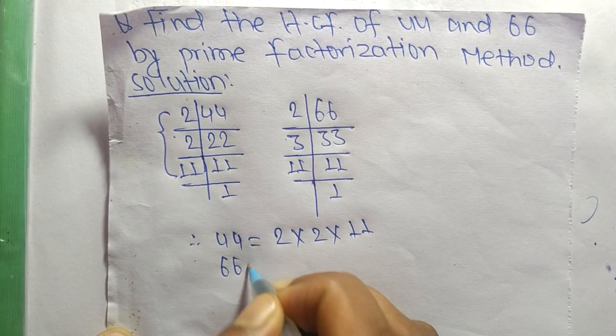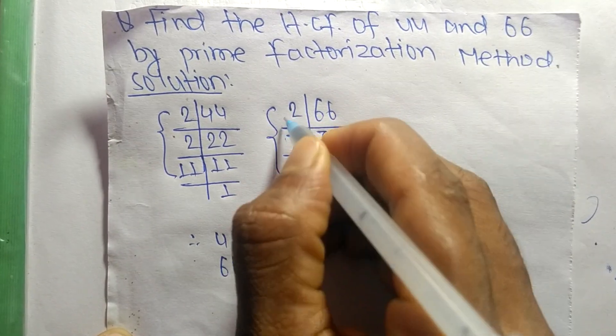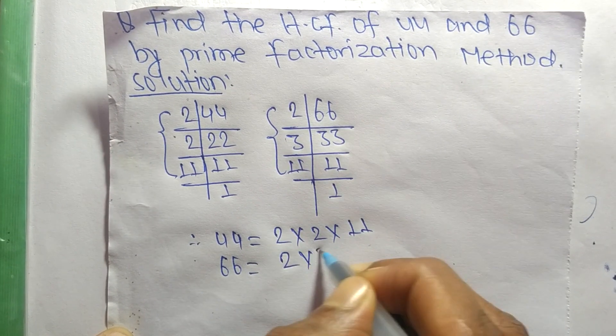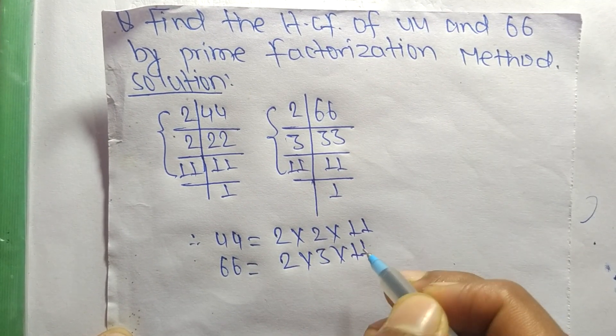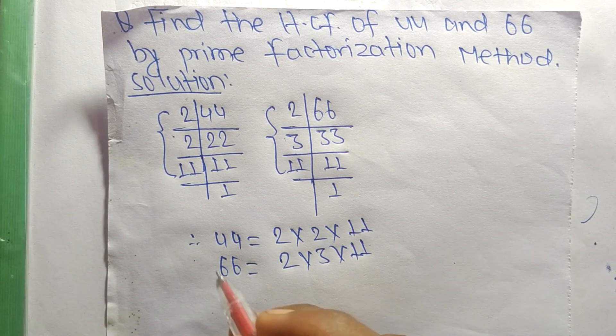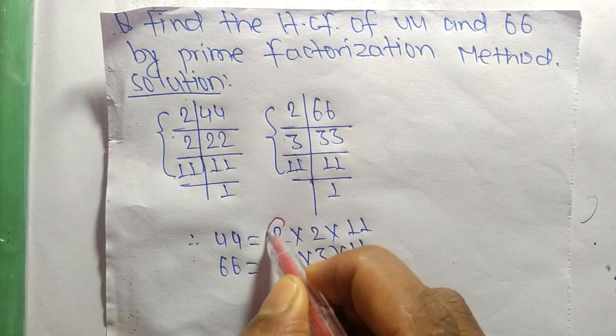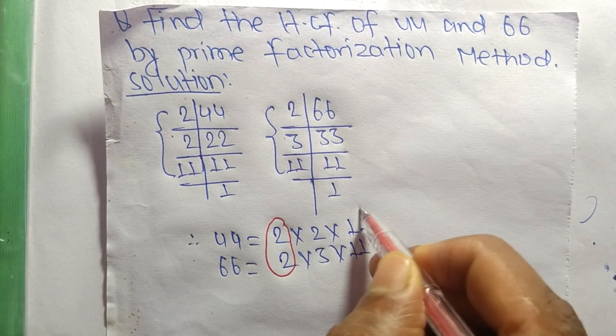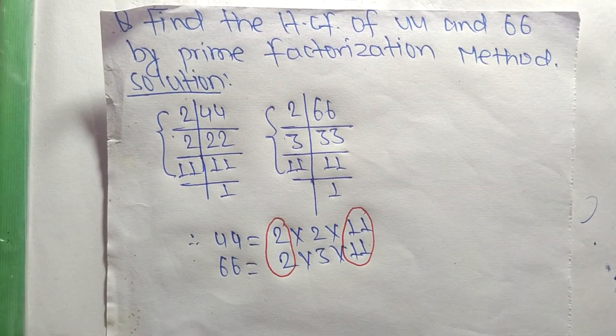And 66 equals 2 times 3 times 11. Now we find the common factors in these prime factorizations. The first common factor is 2, and the second one is 11.